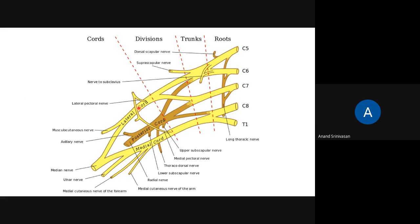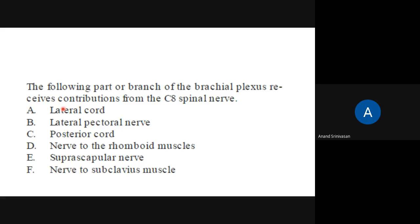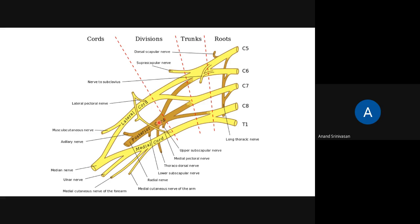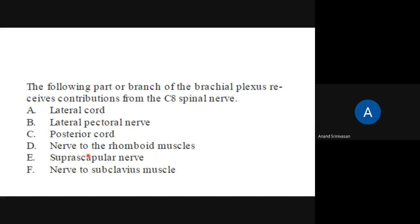The lateral cord is formed from C5 and C6. The medial cord is formed from C8 and T1. The posterior cord is from all three - the posterior divisions of all three trunks: C5, C6, C7, C8 - giving the posterior cord. So here they have given lateral cord and posterior cord as choices. Posterior cord is the answer because C8 is included. But they have not given medial cord - instead they have given branches from the lateral cord, like the lateral pectoral nerve.